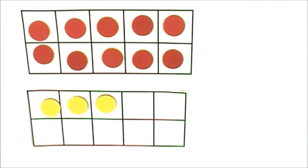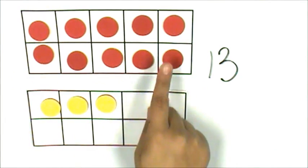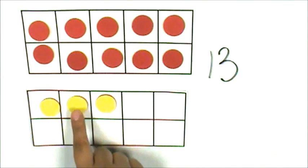Let's determine the number of counters shown in the set. The double 10 frame represents 13. The 10 frame is full and that's 10, 11, 12, 13.